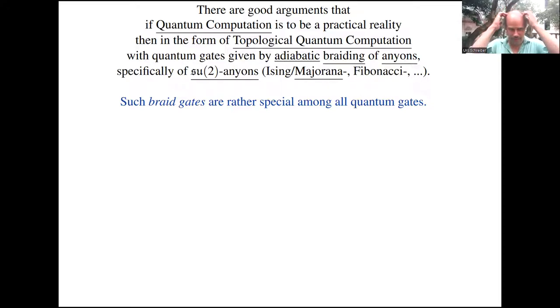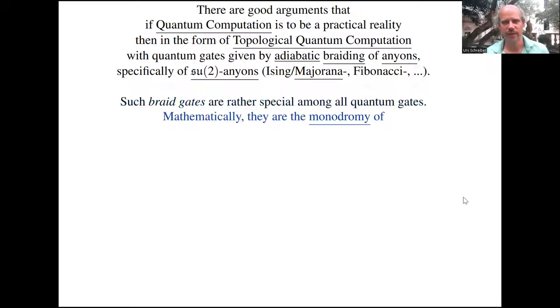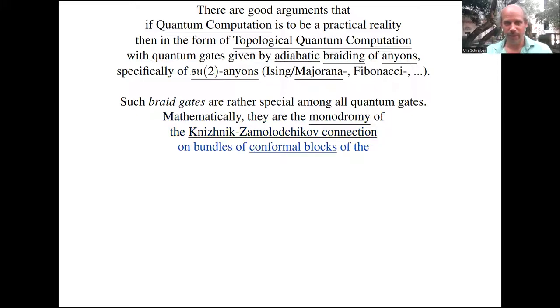The point I want to highlight is that these braid gates are rather special among all quantum gates. Let's look at what it means mathematically. If you unwind all the things that go into this, it says that such an anyon braid gate is mathematically the monodromy of the Knizhnik-Zamolodchikov connection on the bundle of conformal blocks of the chiral SU(2) Wess-Zumino-Witten model conformal field theory.